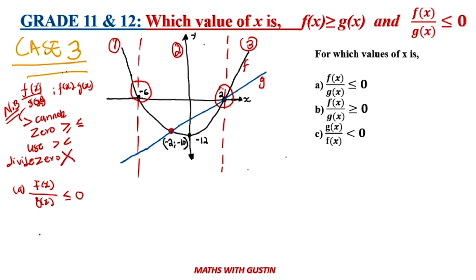So it means you are looking for a situation where when you put values of x into any of these functions you get a positive and a negative — then it will be less than zero. You are looking for a situation where one graph is on top of the x-axis and the other is below. On top of the axis is positive; below the x-axis is negative. In Stage 1, f of x is above the x-axis and g of x is below, so Stage 1 is satisfied.